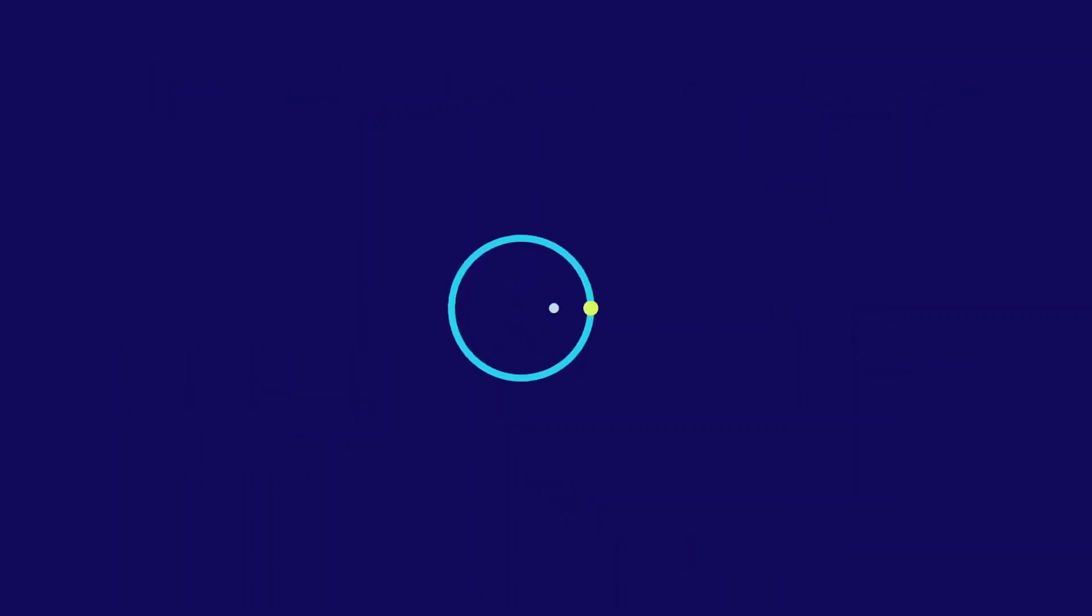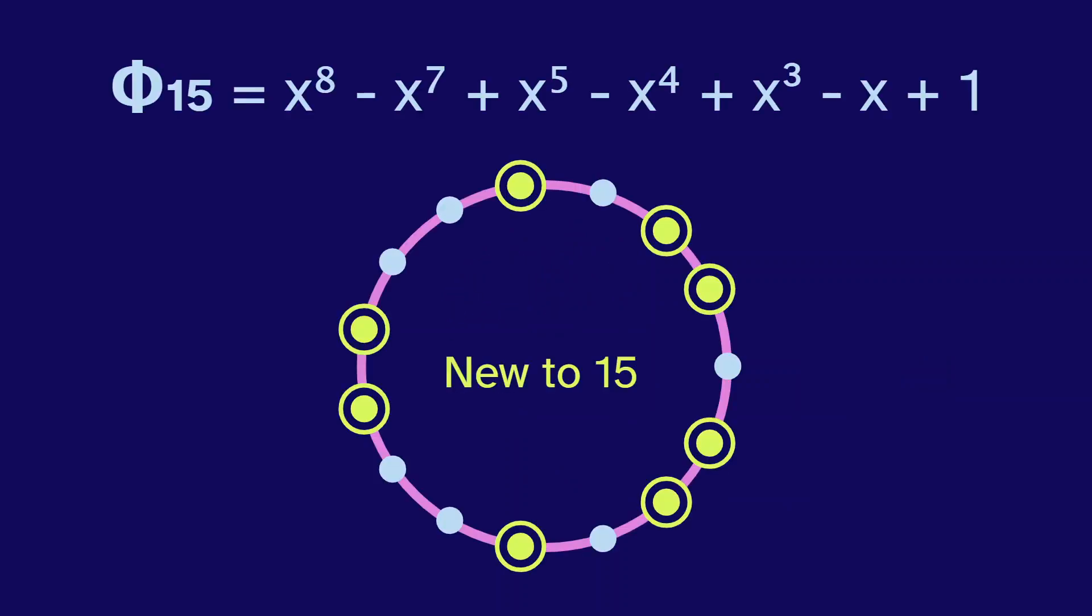These 8 roots are a subset of the 15 evenly spaced numbers anchored at 1. So why not use all 15? Well, first of all, that would give us a boring animation. But more importantly, these 8 points are the ones that are new to 15.